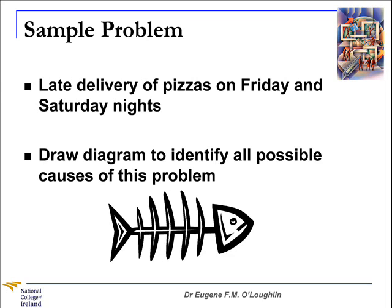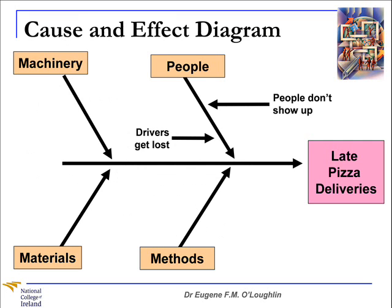The best way to illustrate how to use a cause and effect diagram is to go through an example. Suppose we have a pizza delivery company experiencing a lot of complaints from customers about late deliveries of pizzas on busy Friday and Saturday nights, and we're going to draw a diagram to identify all possible causes of this problem. This diagram is taken from a small book called The Memory Jogger Part 2, a pocket guide of tools for continuous improvement and effective planning, written by Michael Brassard and Diane Ritter and published by Goal QPC in 1994.